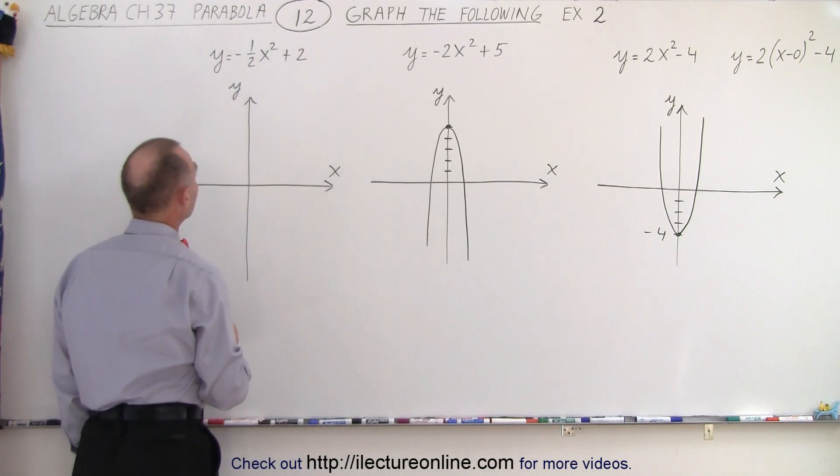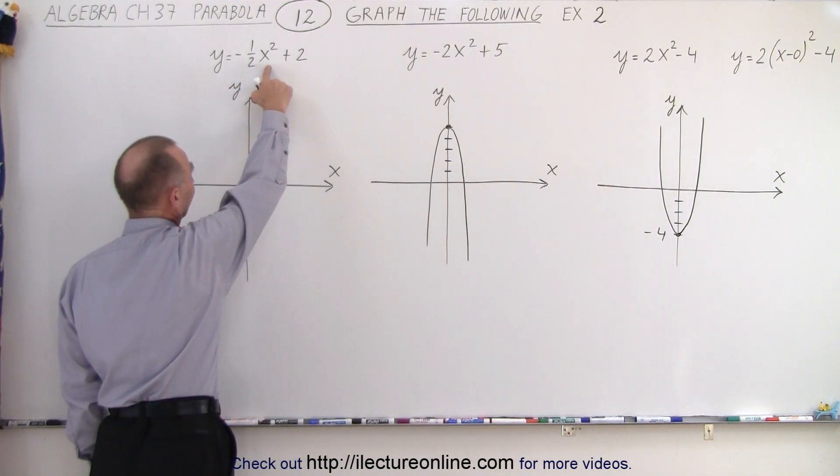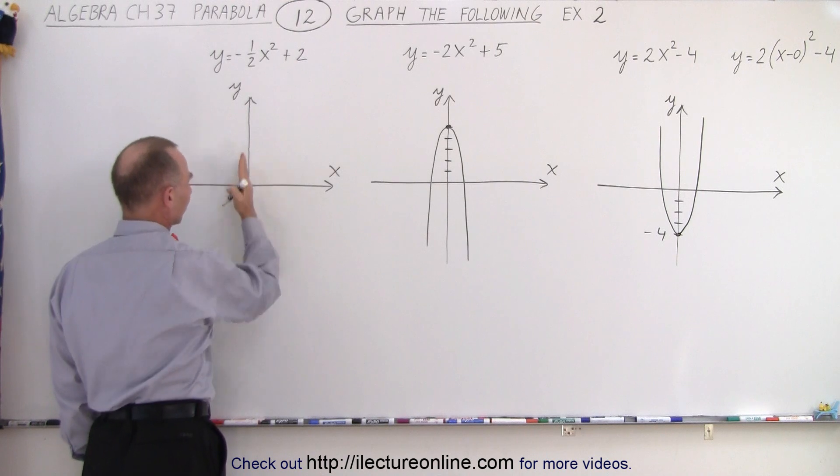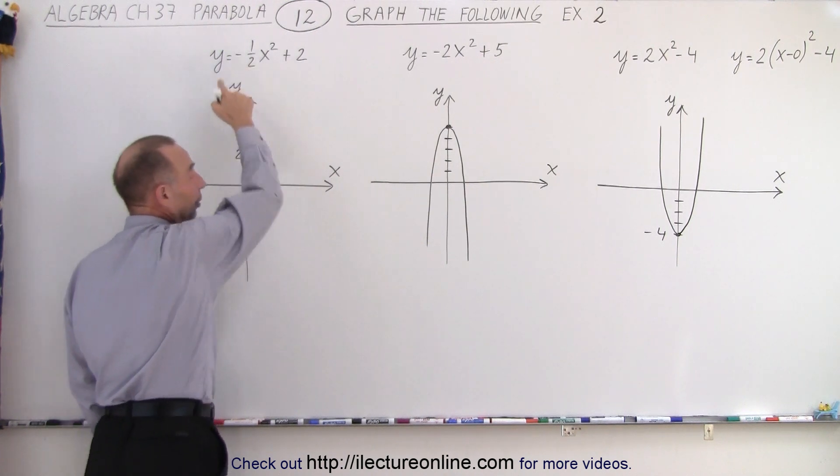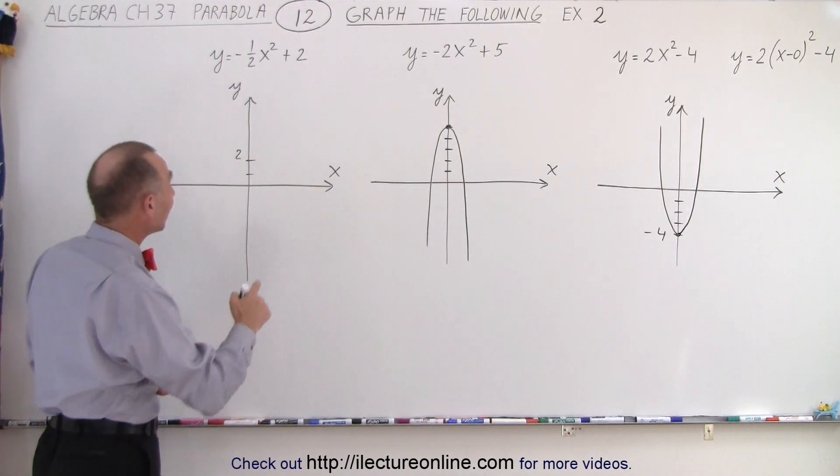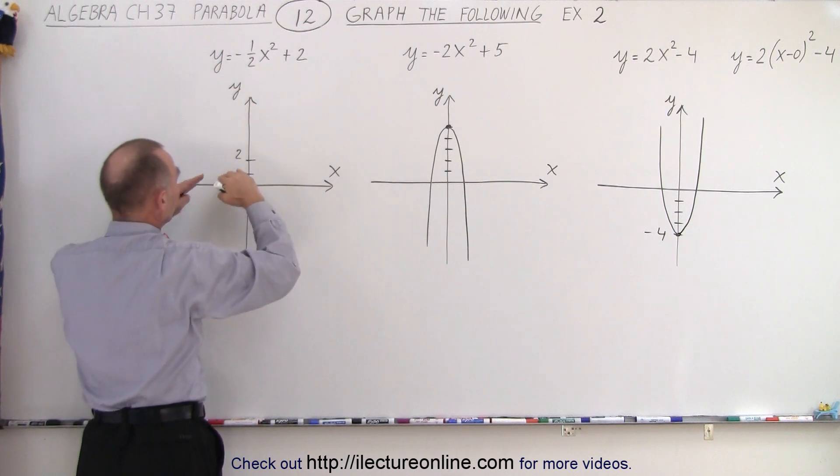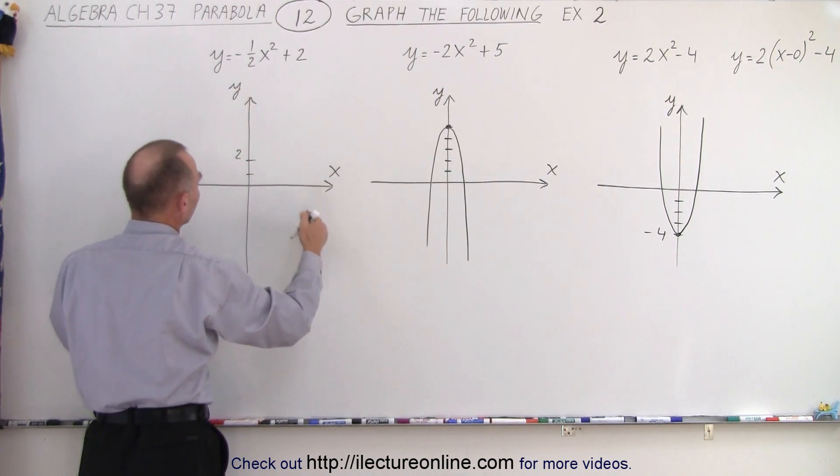On the third example, again there's no shift to the left or to the right. That means the vertex is on the y-axis. There's a shift up of 2 units. 1, 2. And the parabola will open downward because there's a negative sign. And the 1 half means that y will not grow as fast so it will be a much wider parabola. So it will kind of look like this.